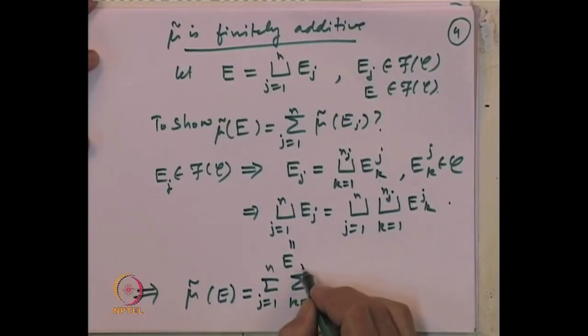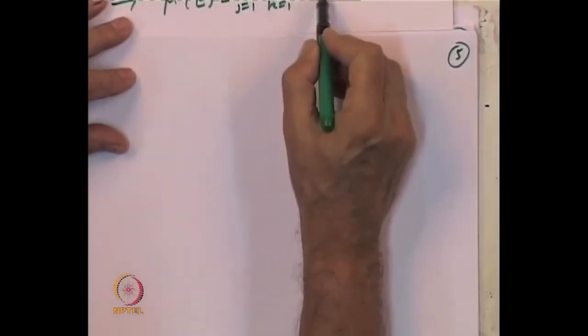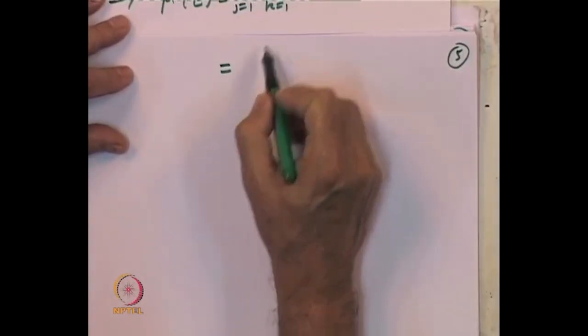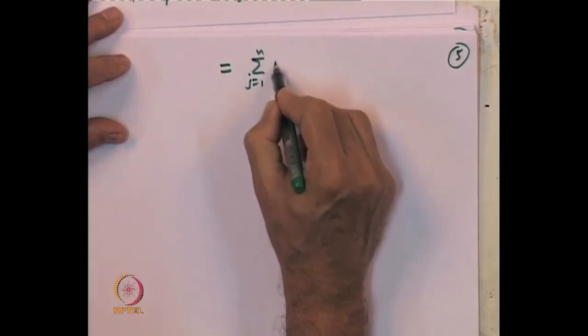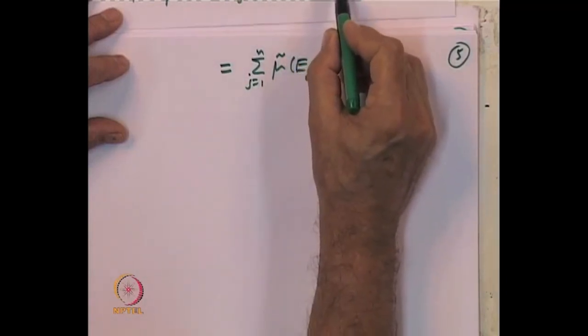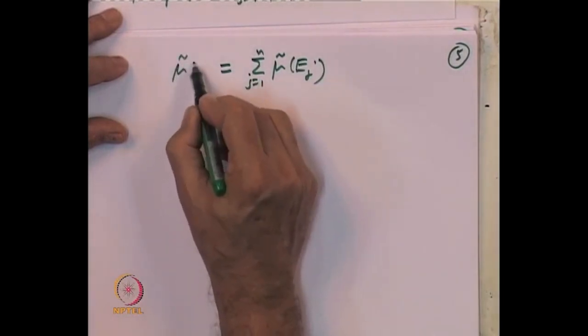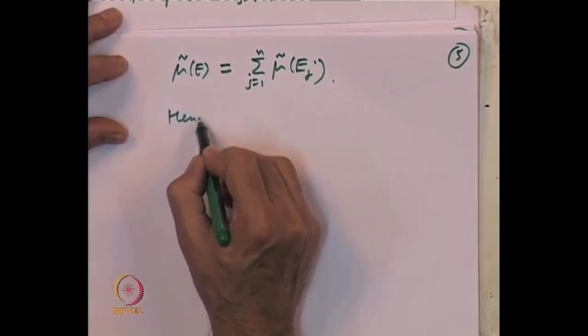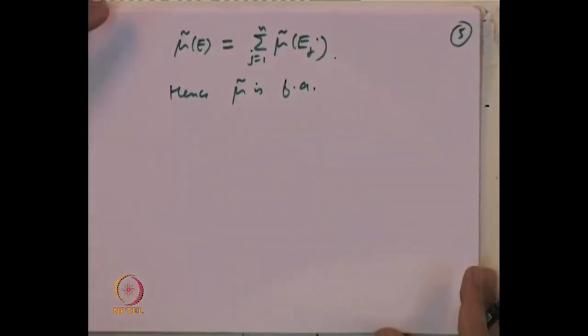Therefore, mu-tilde(E) equals the double sum over j and k of mu(E_{kj}), which by definition equals the sum over j of mu-tilde(E_j). Hence, mu-tilde is finitely additive. Uniqueness was already shown. Thus, we have shown that a measure defined on a semi-algebra can be uniquely extended to the algebra generated by it.